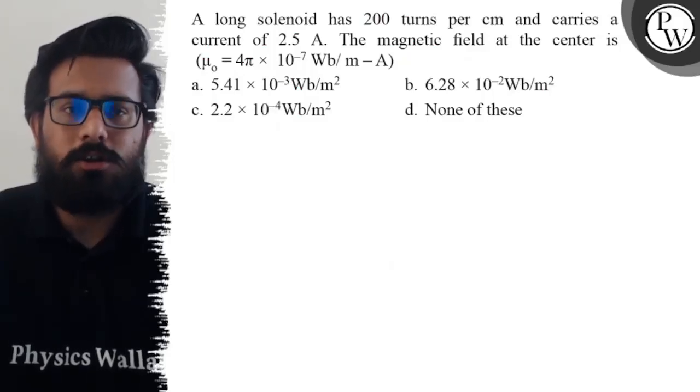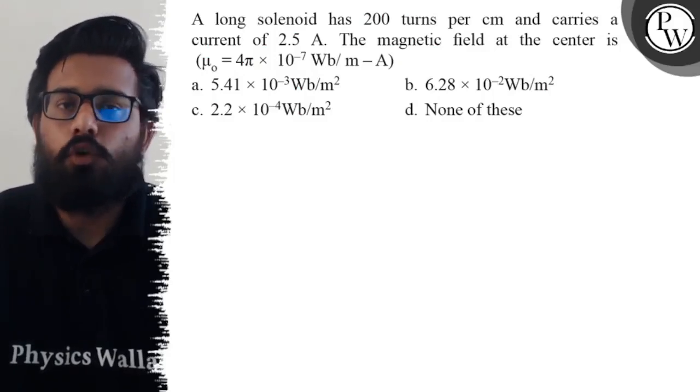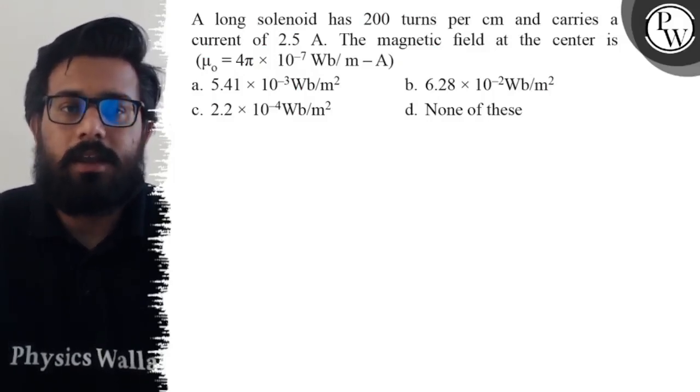Hello Bajos. Let's see the question. A long solenoid has 200 turns per centimeter and carries a current of 2.5 ampere. The magnetic field at the center is: